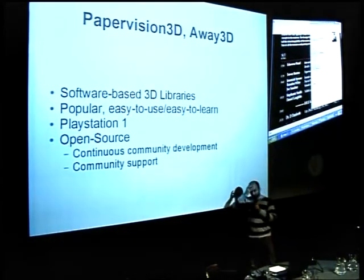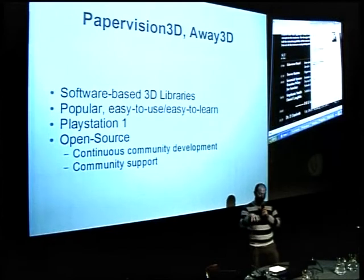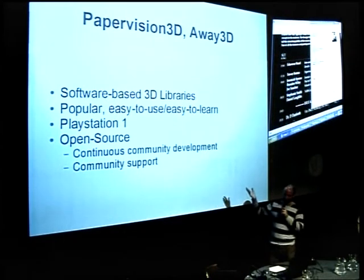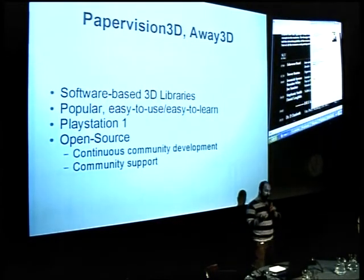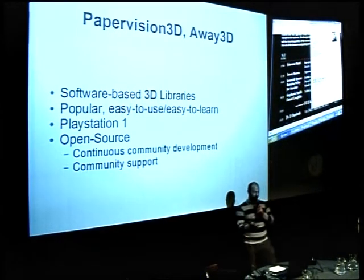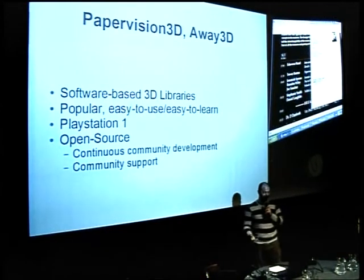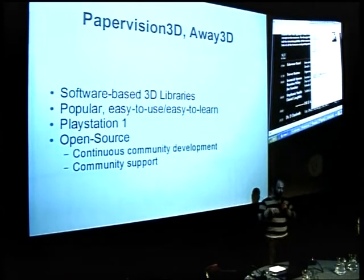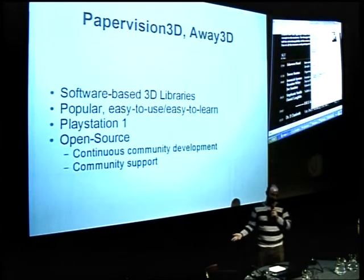PaperVision 3D and Away 3D are the two main engines. They're both software-based, so there's nothing actually in the player — you have to write everything yourself. They're popular, easy to learn, easy to use, because they're aimed at the lower end of the market. The rule of thumb for quality and performance is: if it works on the PlayStation 1, you can do it in Flash. They're both open source, which means they have continuous community development and have been used in production games, websites, etc., with a lot of community support.